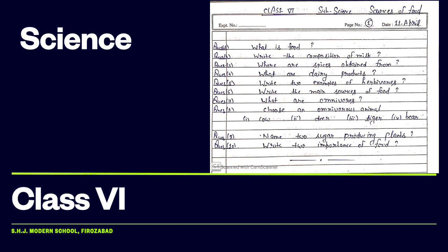Next topic, food habits of animals. There are three main categories. First category is herbivores, second category is carnivores, and third category is omnivores.